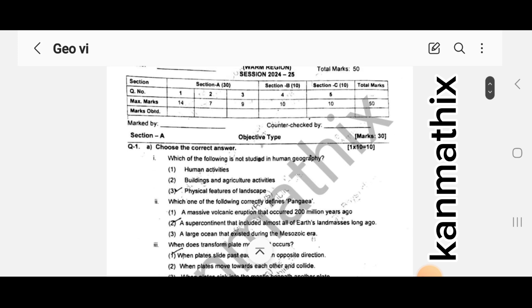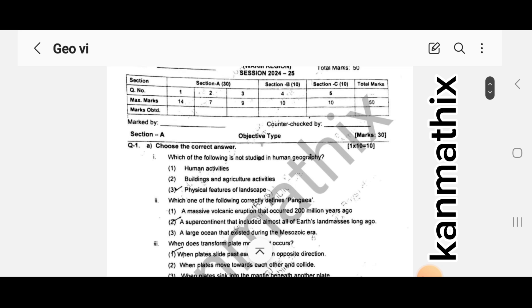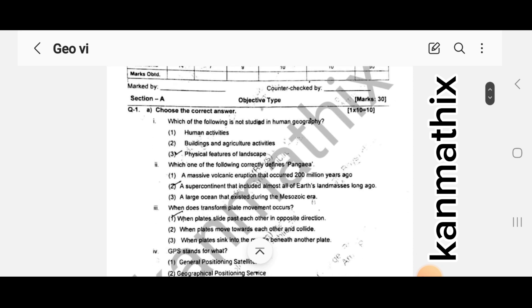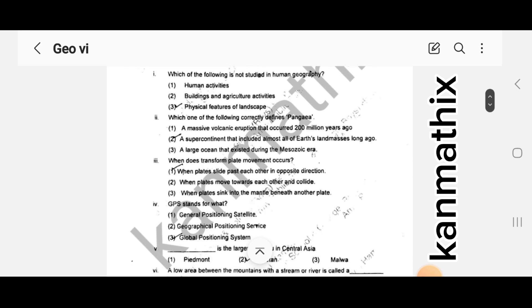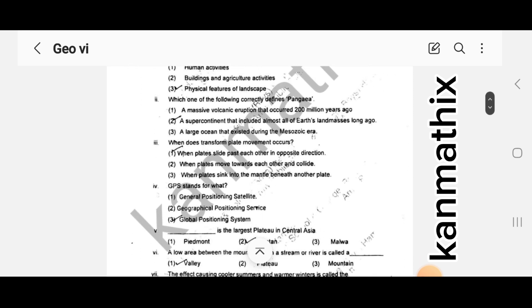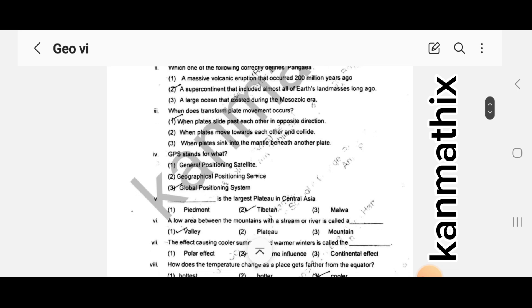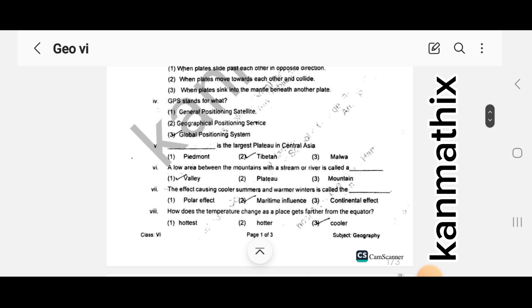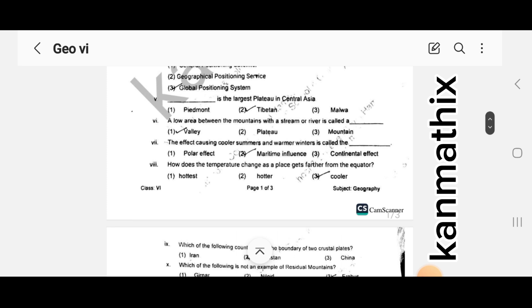The first part is choose the correct answer MCQs. Number 1 correct option is 3. MCQ number 2 correct option is 2. MCQ number 3 correct option is 1. MCQ number 4 correct option is 3. MCQ number 5 correct option is 2. MCQ number 6 correct option is 1. MCQ number 7 correct option is 2.